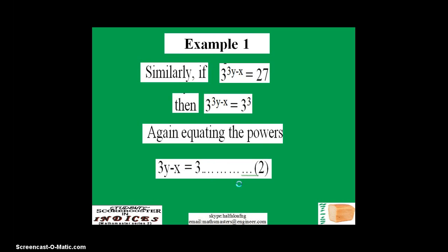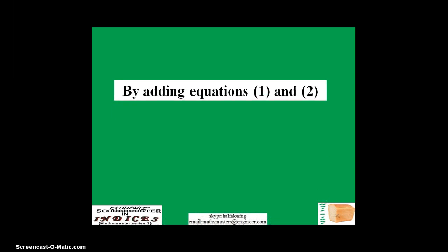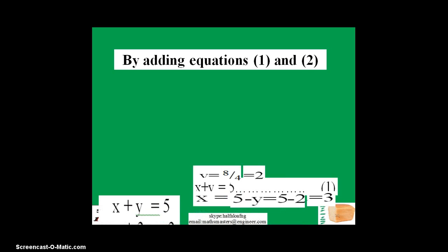Looking at the second equation that was given in the question, similarly, if 3 raised to power 3y minus x equals 27, we can also factorize this one with a factor of 3 so that we can have 3 raised to power 3y minus x equals 3 raised to power 3. Now that again we have equal bases, we can equate the exponents, thus 3y minus x equals 3. This forms equation 2. We can add equation 1 and equation 2.